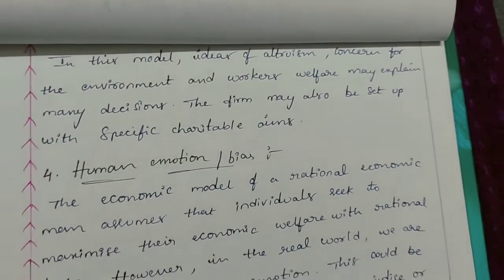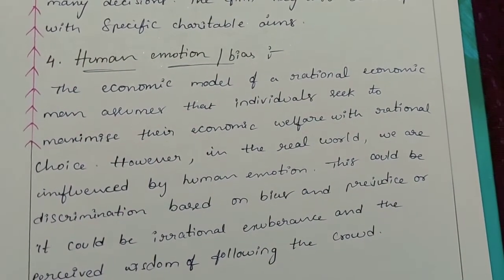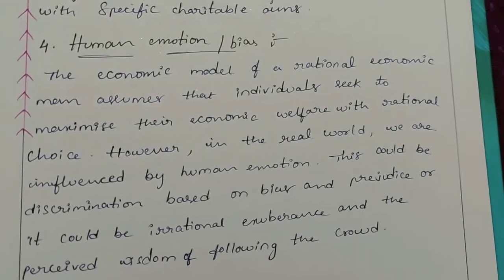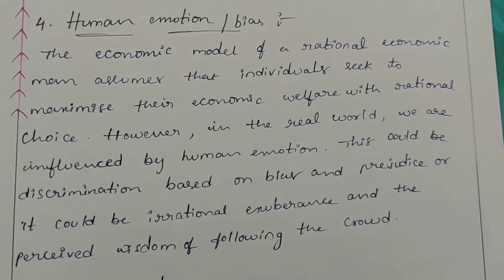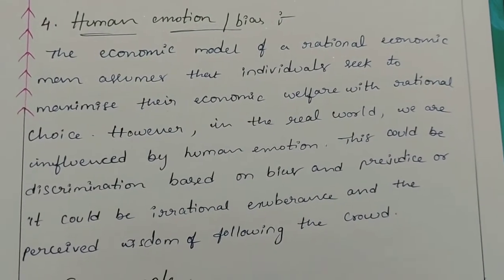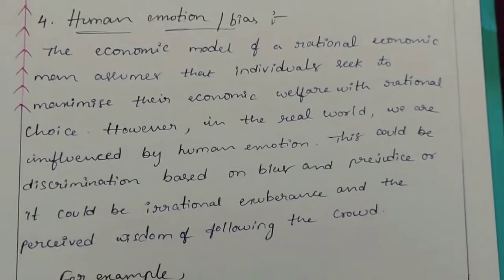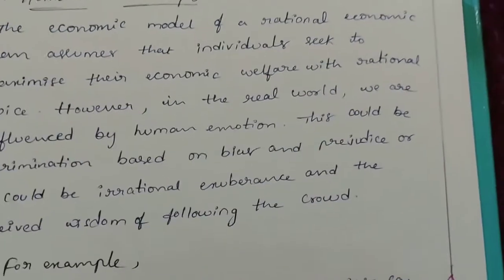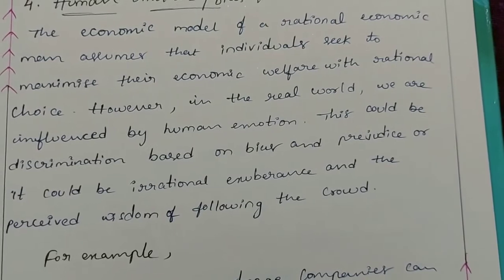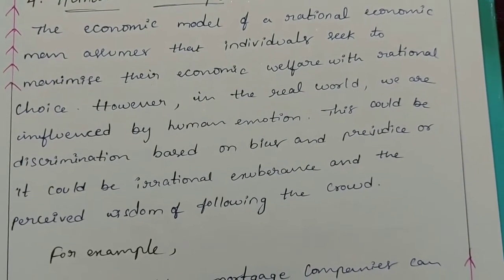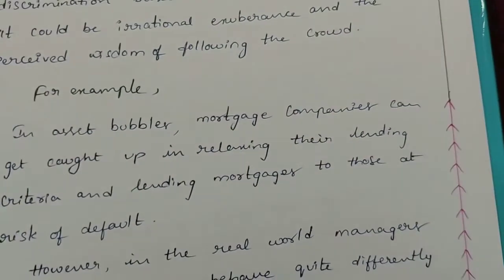The firm may also be set up with specific charitable aims. Element 4: Human Emotion or Bias. The economic model of a rational economic man assumes that individuals seek to maximize their economic welfare with rational choice. However, in the real world, we are influenced by human emotion. This could be discrimination based on bias and prejudice, or irrational exuberance and the perceived wisdom of following the crowd.